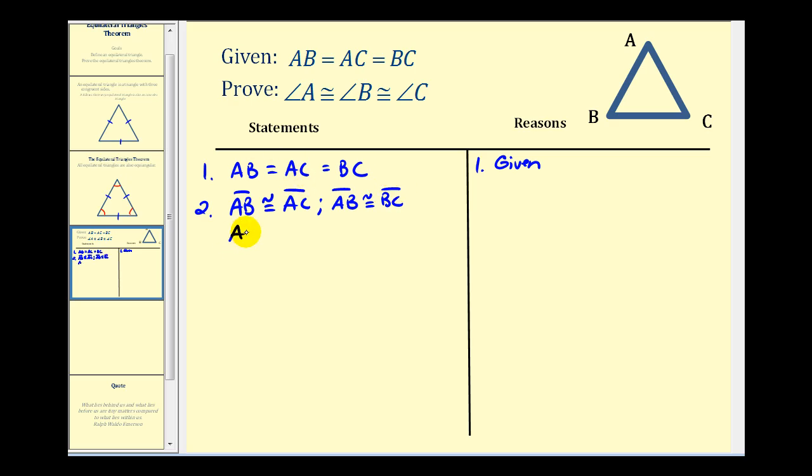And side AC is congruent to side BC. This is true by the definition of congruent segments. If these segments or sides have the same length, then they're also congruent.